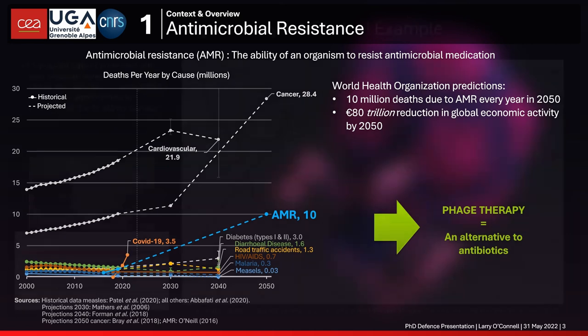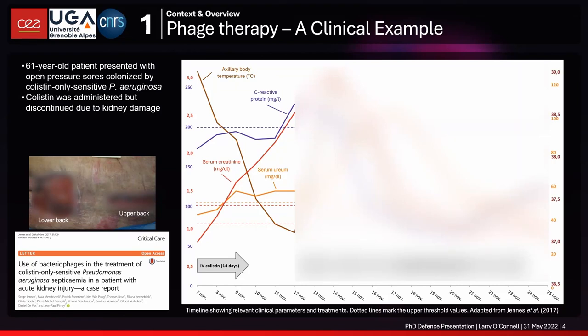To explain phage therapy, I'll give a clinical example. This is the case of a 61-year-old patient who presented with a Pseudomonas aeruginosa infection resistant to every antibiotic except colistin. Colistin is an antibiotic of last resort because it's highly damaging to the kidneys — nephrotoxic. After two weeks, colistin treatment had to be stopped to avoid kidney failure, as indicated by rising serum creatinine levels.